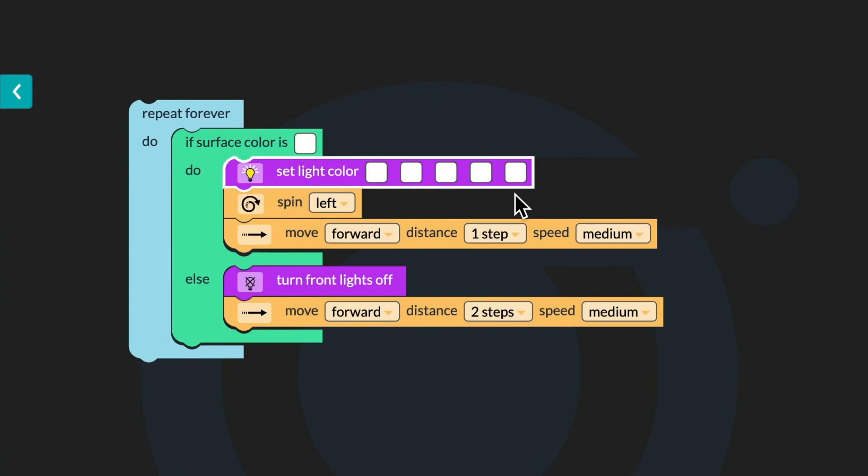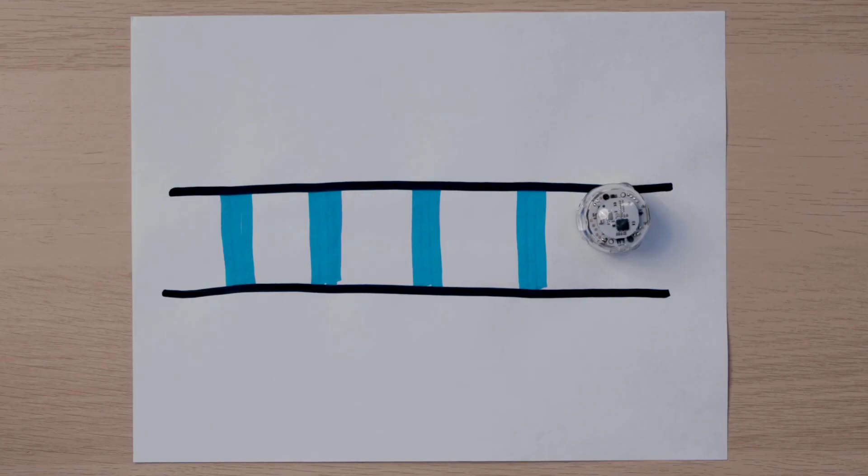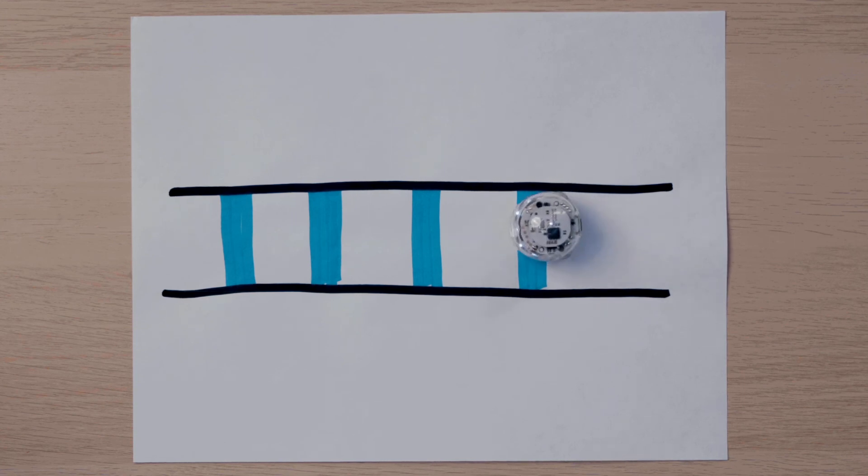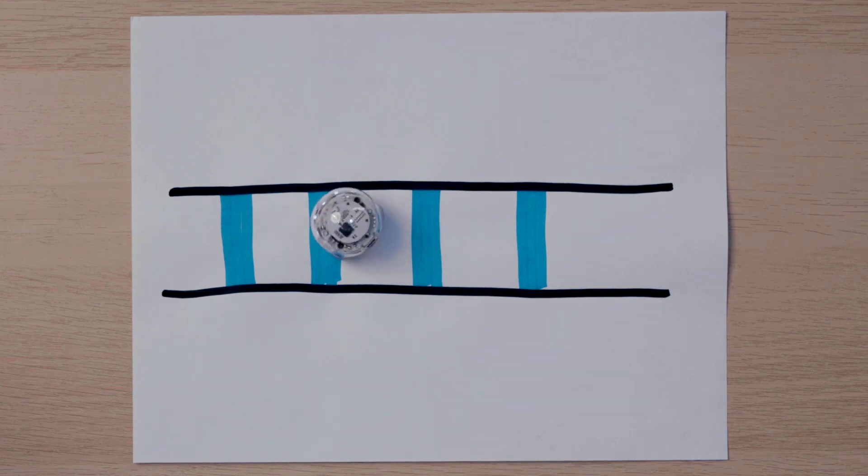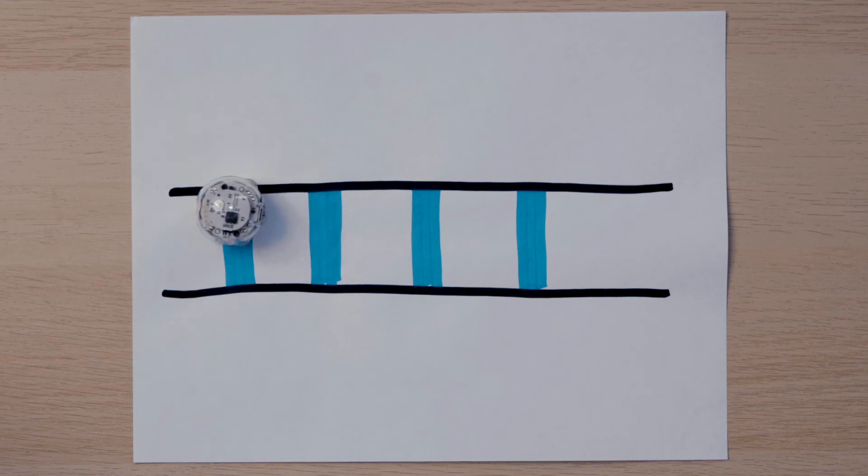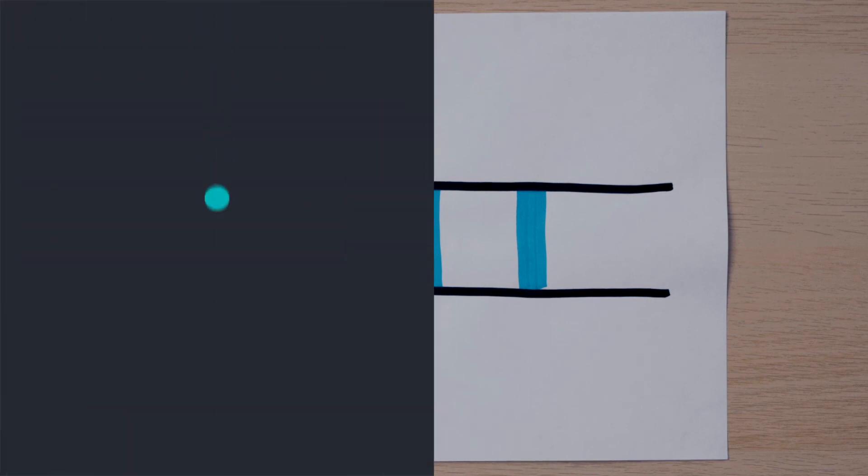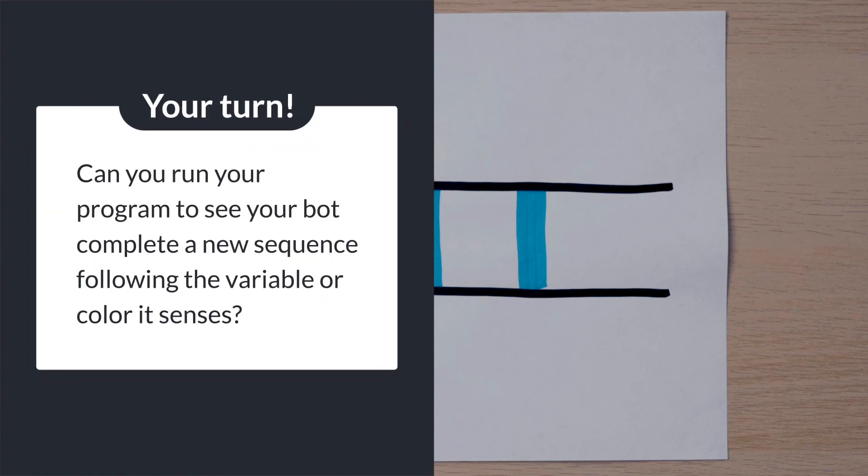After you've changed all of the color boxes to white, you will run the program again. Your bot will now complete a different sequence of actions as it moves along the path. Your bot should get excited before it jumps in each puddle and move quicker through each puddle as it moves two steps instead of one. Can you run your program to see your bot complete a new sequence following the variable or color it senses?